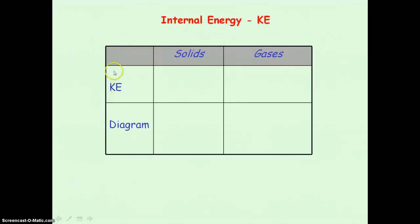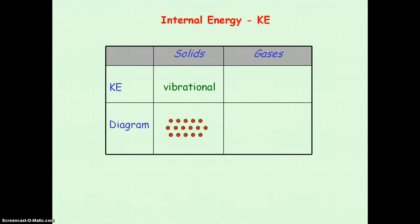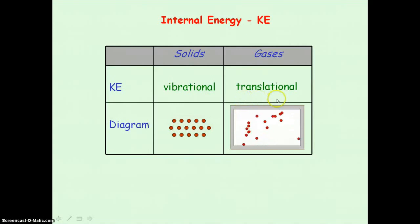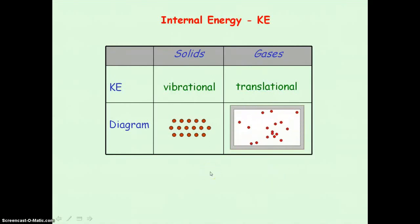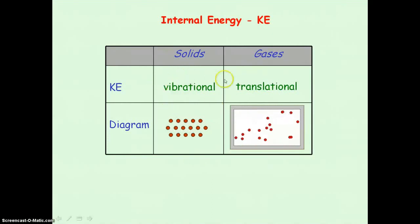If we consider the kinetic energy of the atoms or molecules of a solid, we'd say it's vibrational, because the atoms or molecules are vibrating about a fixed point. For a gas, we'd say it's translational, meaning the atoms or molecules are moving from one place to another. For a liquid, it's mainly vibrational, but there is some translational kinetic energy.